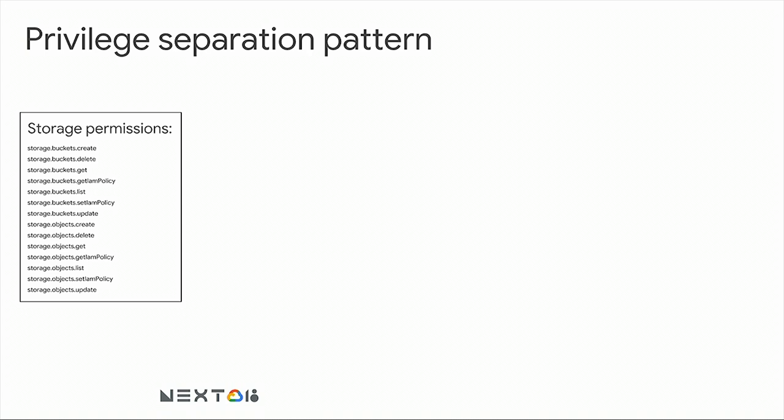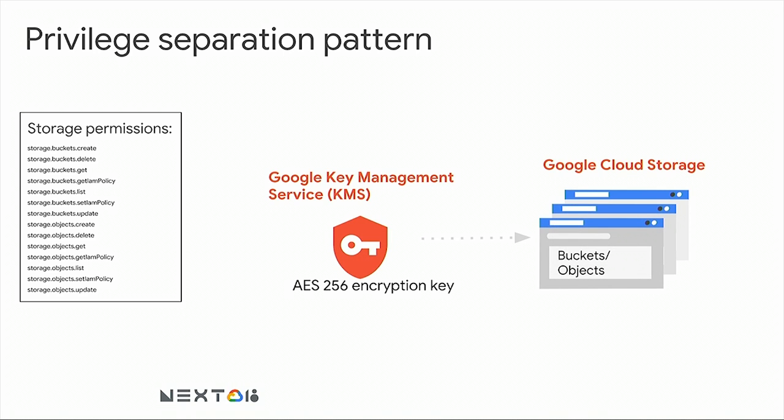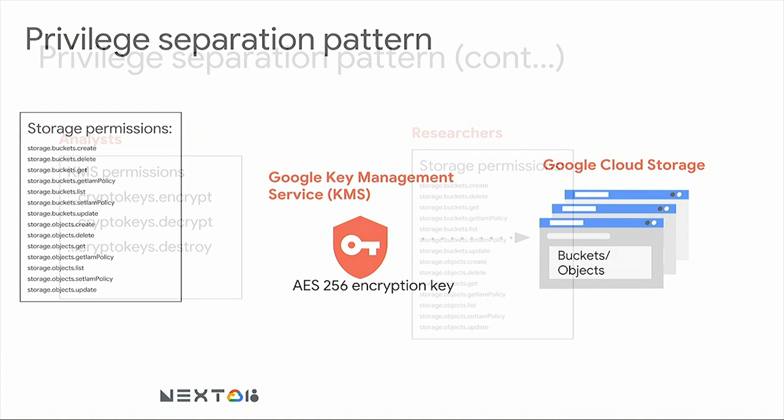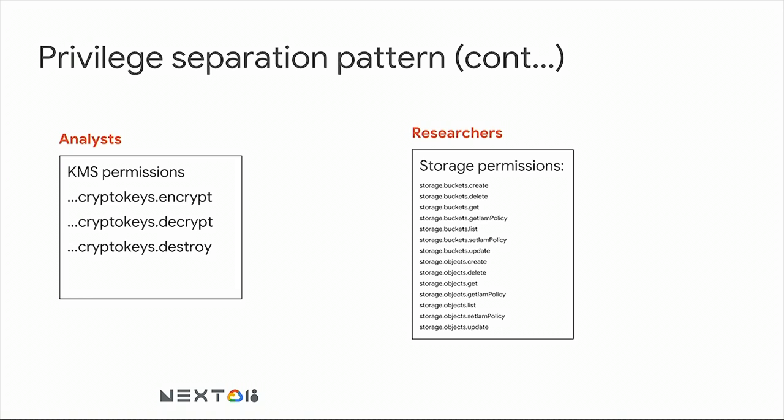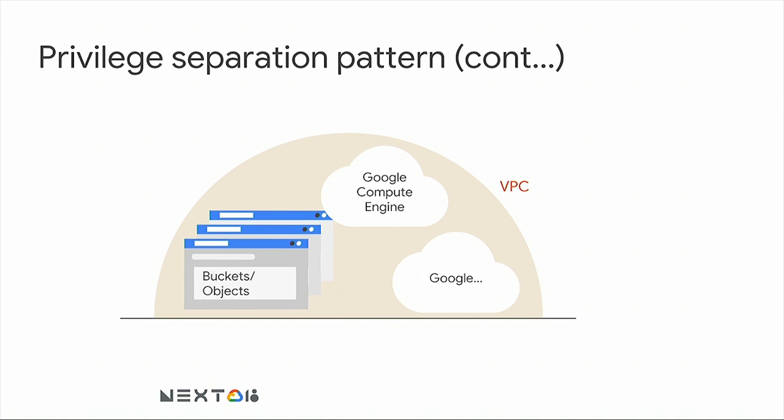Let's talk about the privilege separation pattern. Say you're using Google KMS to encrypt data in Cloud Storage. You now have two sets of permissions to operate with. Analysts at a higher granularity can control which projects have which access. No matter what the storage permissions are, people cannot read the object without the decrypt permission. And if you set up a virtual private cloud across your resources — buckets, objects, Compute Engine, and other services — no data can get out of that perimeter you've set up.